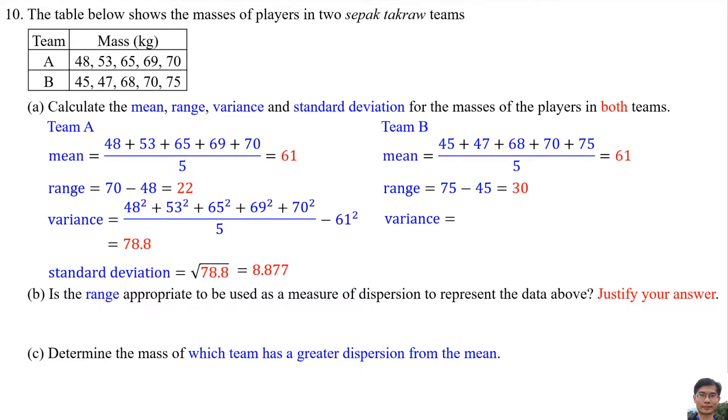Variance is the square of all the masses in Team B and add all of them, then divided by the total number of players in Team B—there are 5 players—then minus the mean squared, 61 squared. So the variance is 135.6. Standard deviation is the square root of variance, so square root of 155.6. So the standard deviation for Team B is 12.47.